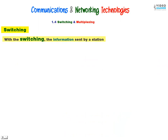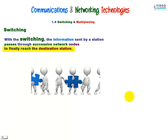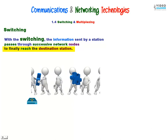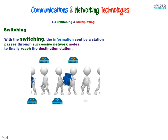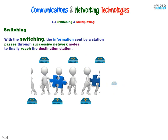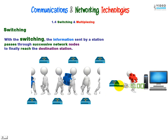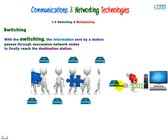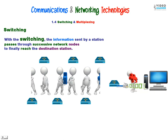Now with switching, the information or data sent by a station passes through successive network nodes to finally reach the destination station. We have people — each person is a node like a router. It's a network device. And finally, through the final router, through a cable RJ45, it reaches each station, a computer.